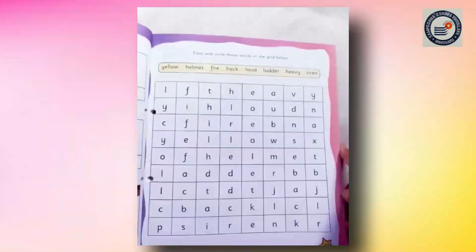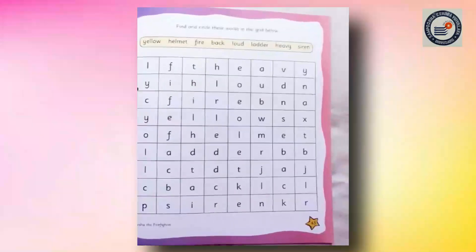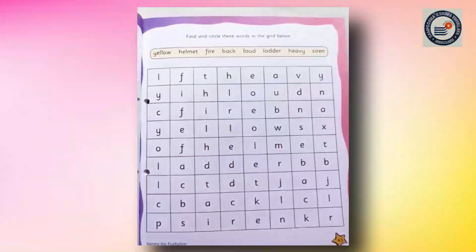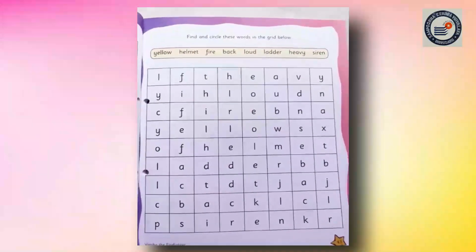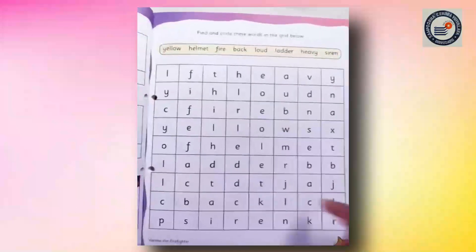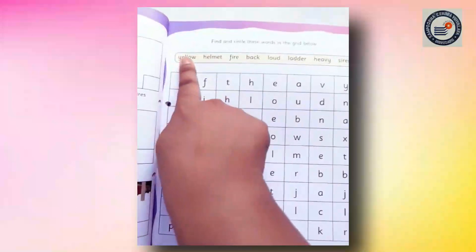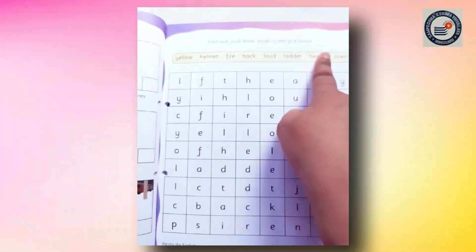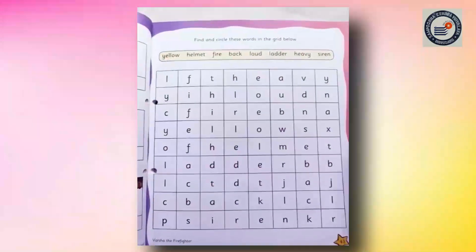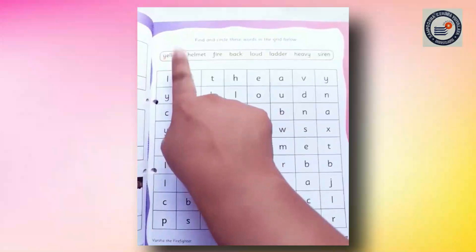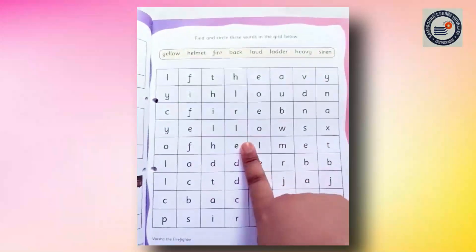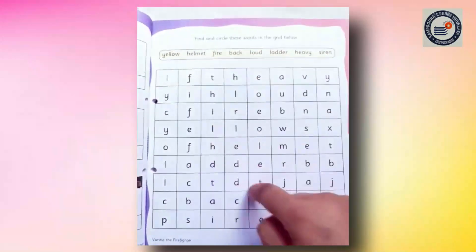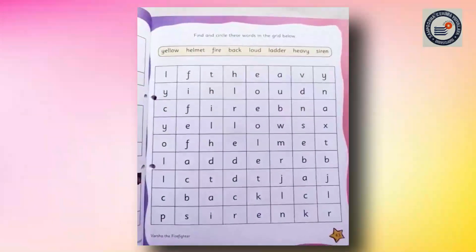Now, all of you come to page number 43. Find and circle these words in the grid below. Can you see some words up here? You have to find these words here, then you have to circle them with a pencil.